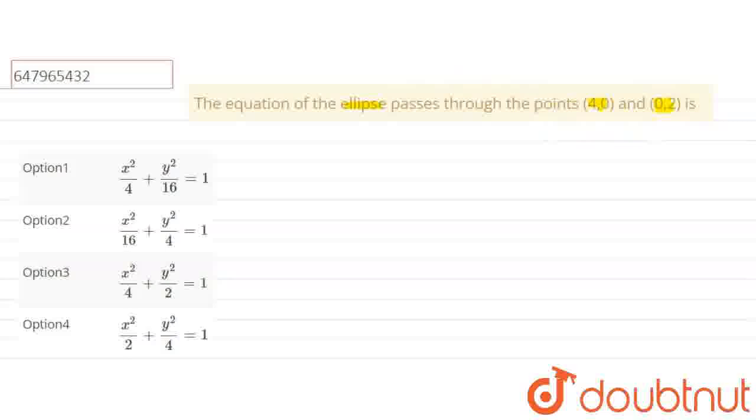Now, when we solve this problem, we need the ellipse general form. Let us review the ellipse general form: x²/a² + y²/b² = 1.